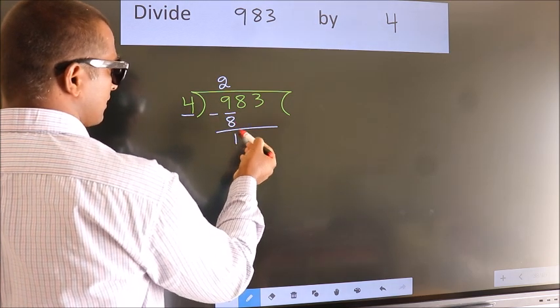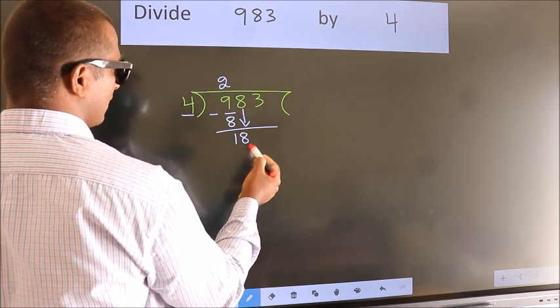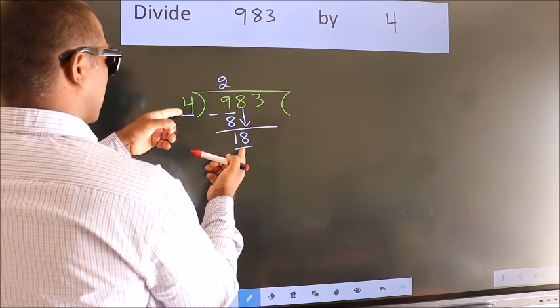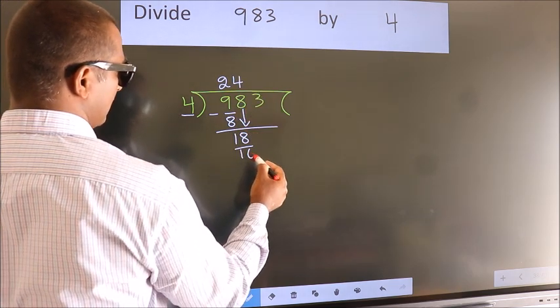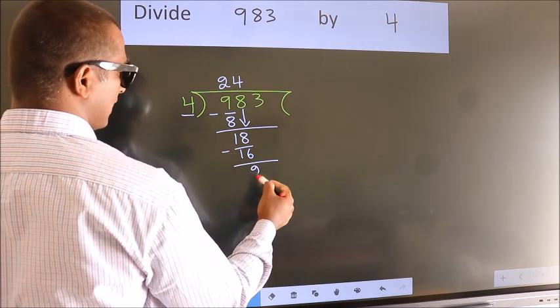After this, bring down the beside number. 8 down, so 18. A number close to 18 in the 4 table is 4 times 4, which is 16. Now we subtract and get 2.